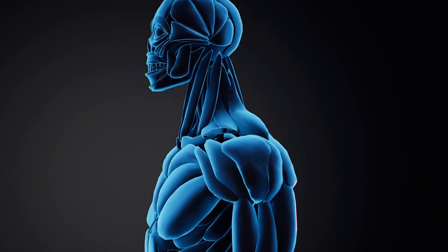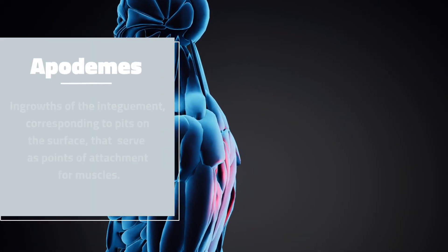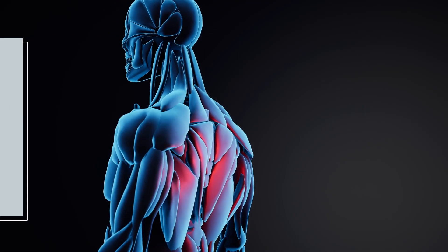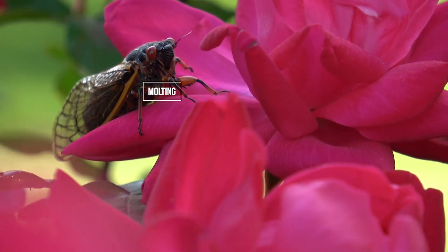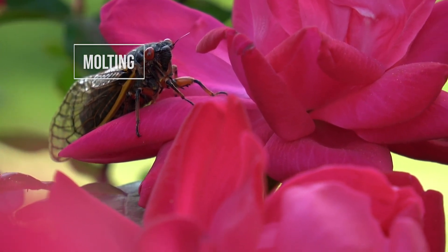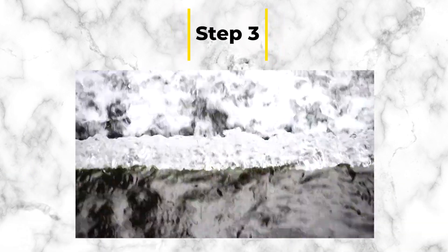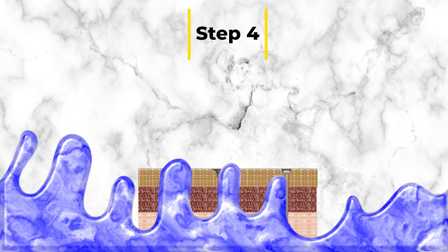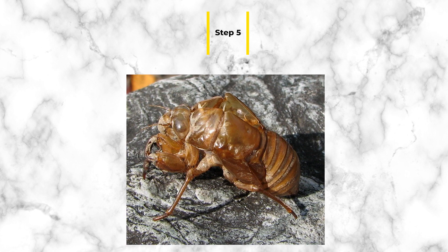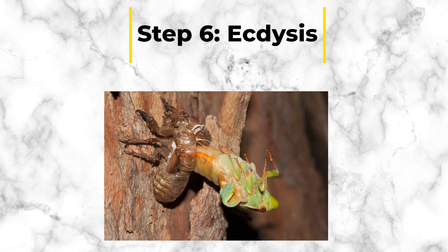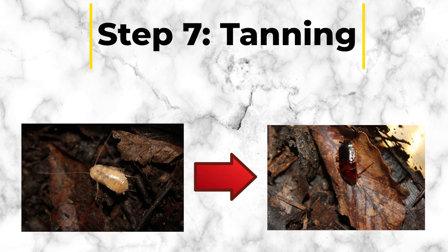To keep internal muscle structure, insects have ingrowths of the integument called apodemes, which serve as attachment points for muscles. Due to the rigid structure of the exoskeleton, it must be shed for an insect to grow in a process known as molting. Molting occurs in a series of complicated steps: Step 1, apolysis, in which the cuticle separates from the epidermis. Step 2, the space between the epidermis and cuticle is filled with molting fluid. Step 3, the new cuticle is secreted on top of the epidermis. Step 4, the old endocuticle is digested by the molting fluid. Step 5, ecdysial lines form along spots of weakness on the old cuticle and begin to split. Step 6, ecdysis, in which the insect escapes from its old skin. Step 7, tanning, in which the chitin in the exoskeleton sclerotizes and darkens.